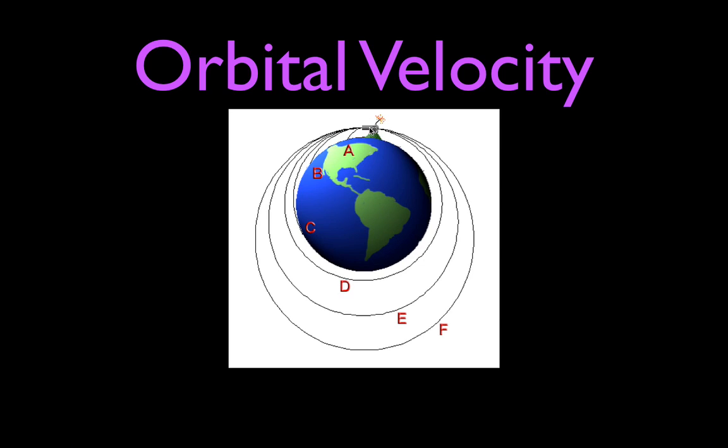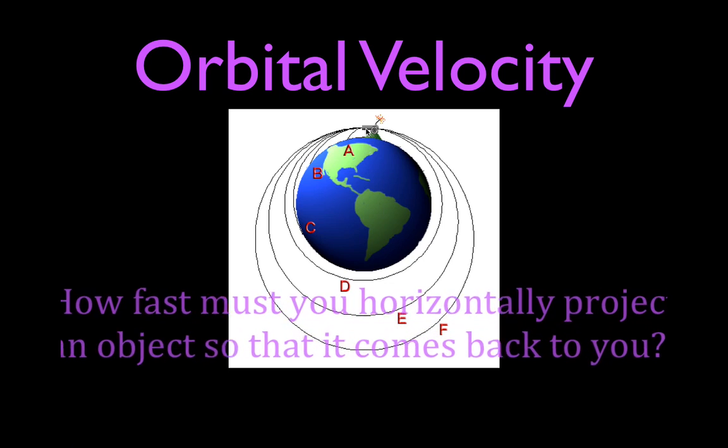And basically, since we said the cannon is one meter off the ground, what we're really doing is putting that object into orbit around the Earth. We have to ignore the atmosphere, of course. We're putting that object around the Earth, so we want to know what in orbit around the Earth.